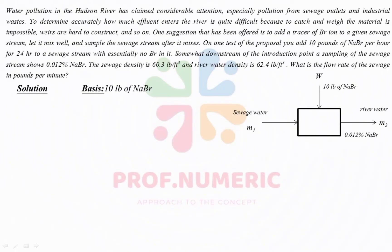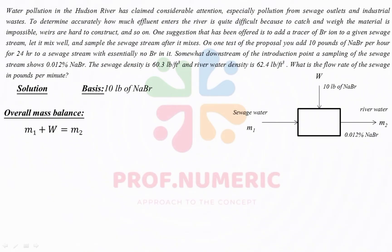Let's start the solution, taking the basis as 10 pounds of bromate per hour. First, we apply an overall mass balance: M1 + W = M2. This equation follows from input equals output, the general mass balance equation for non-reaction processes. Since W equals 10 pounds of sodium bromate, replacing W with 10 gives us M1 + 10 = M2. We call this Equation 1, and we have two unknowns, M1 and M2, so we need one more equation.